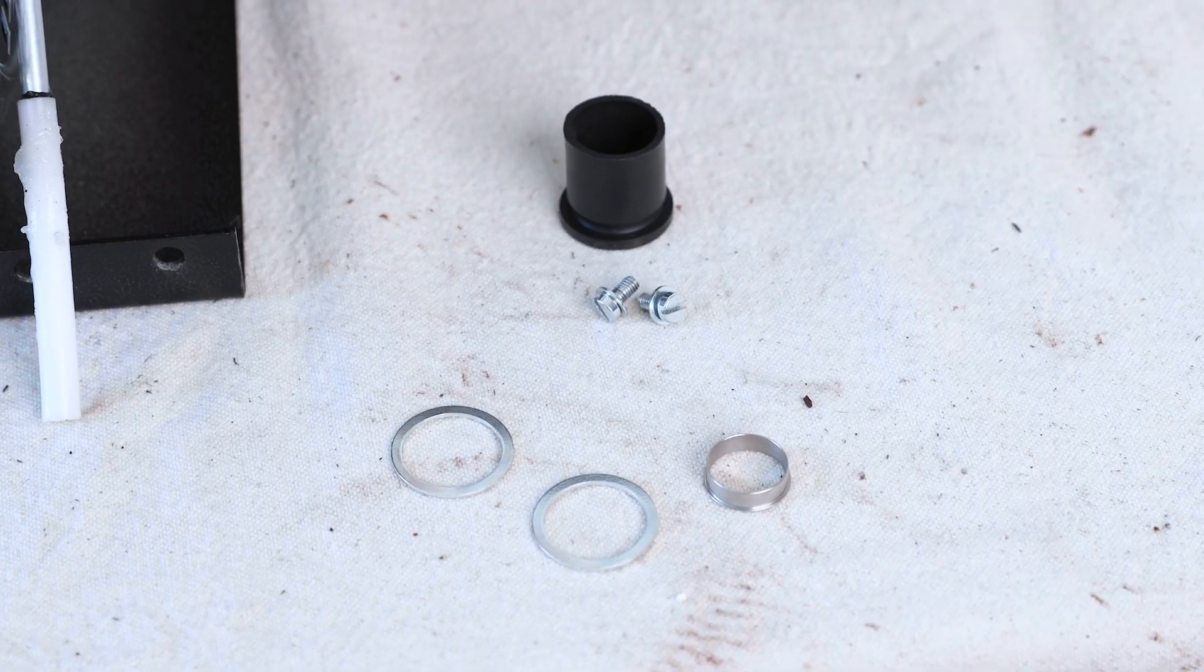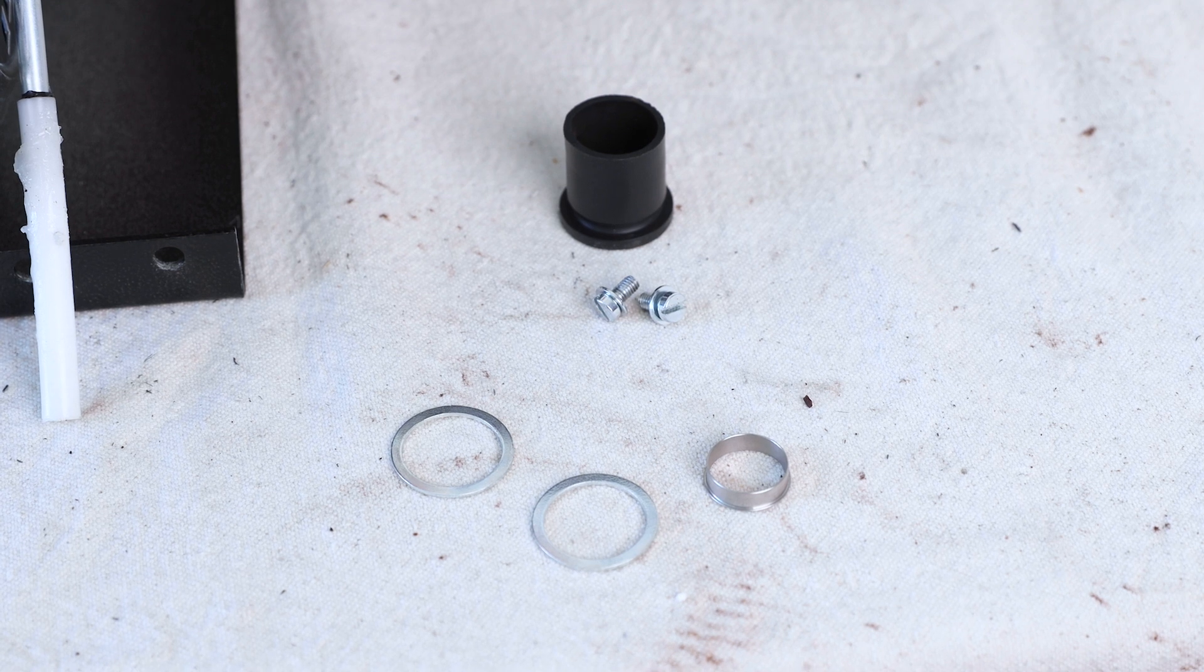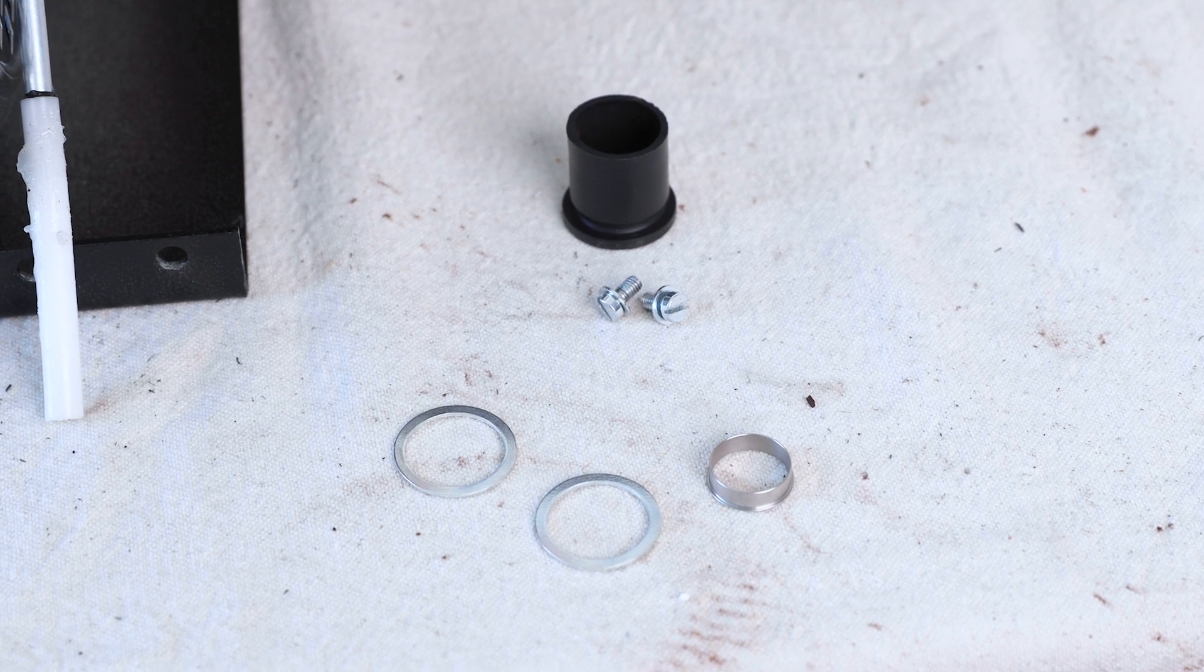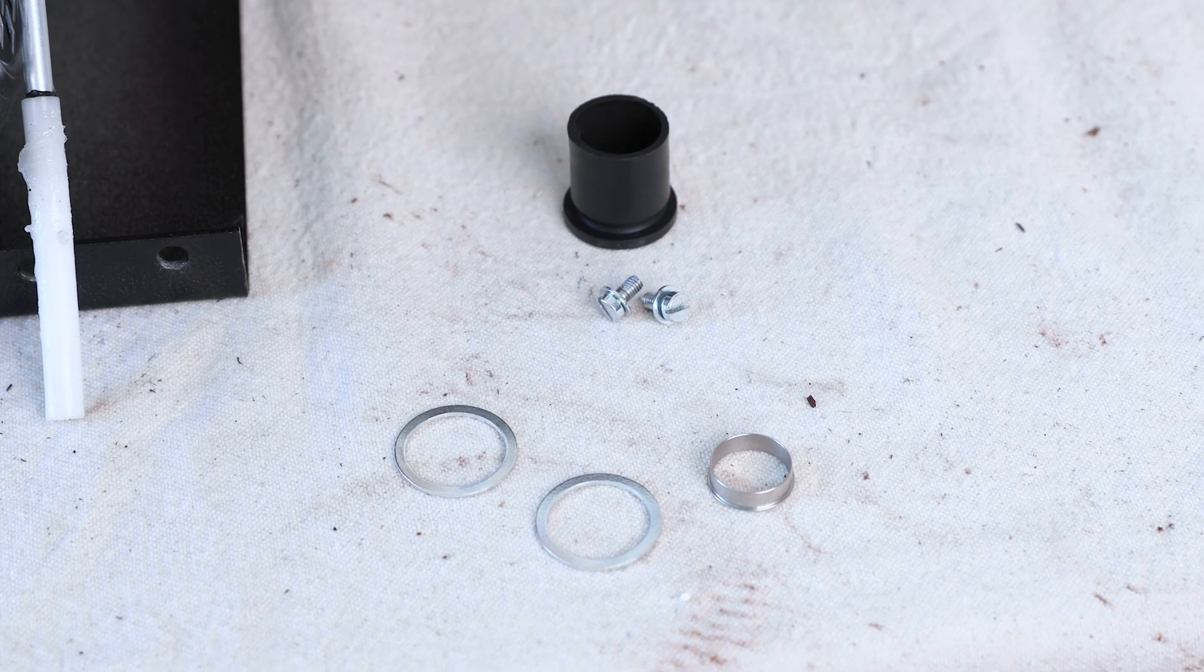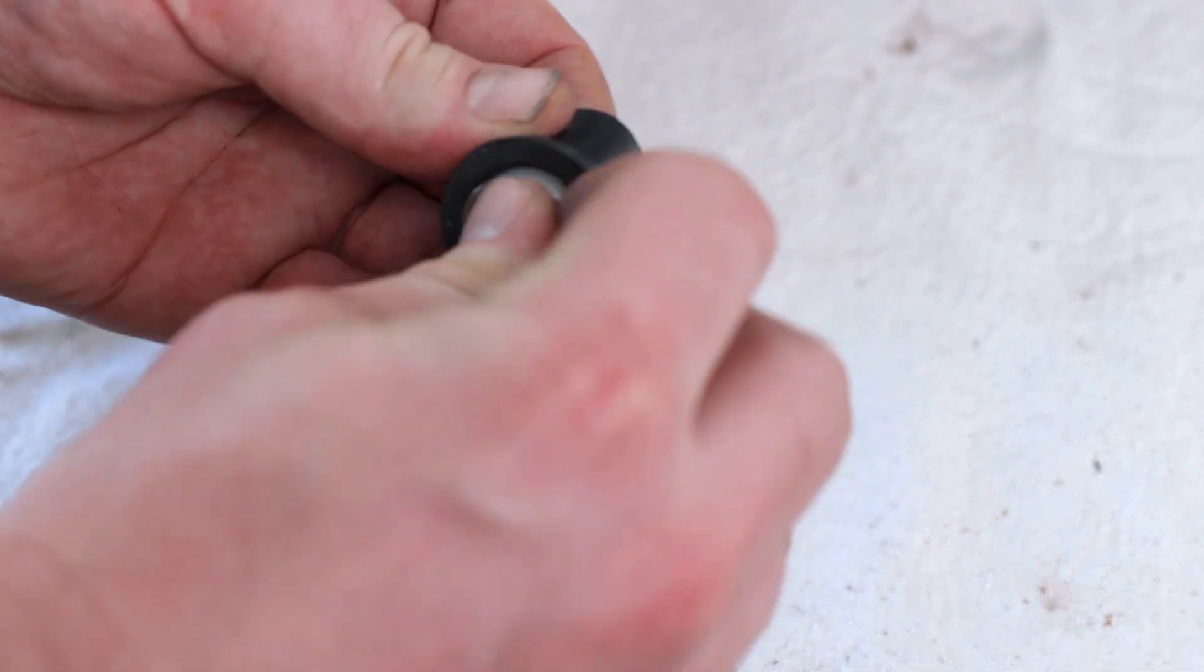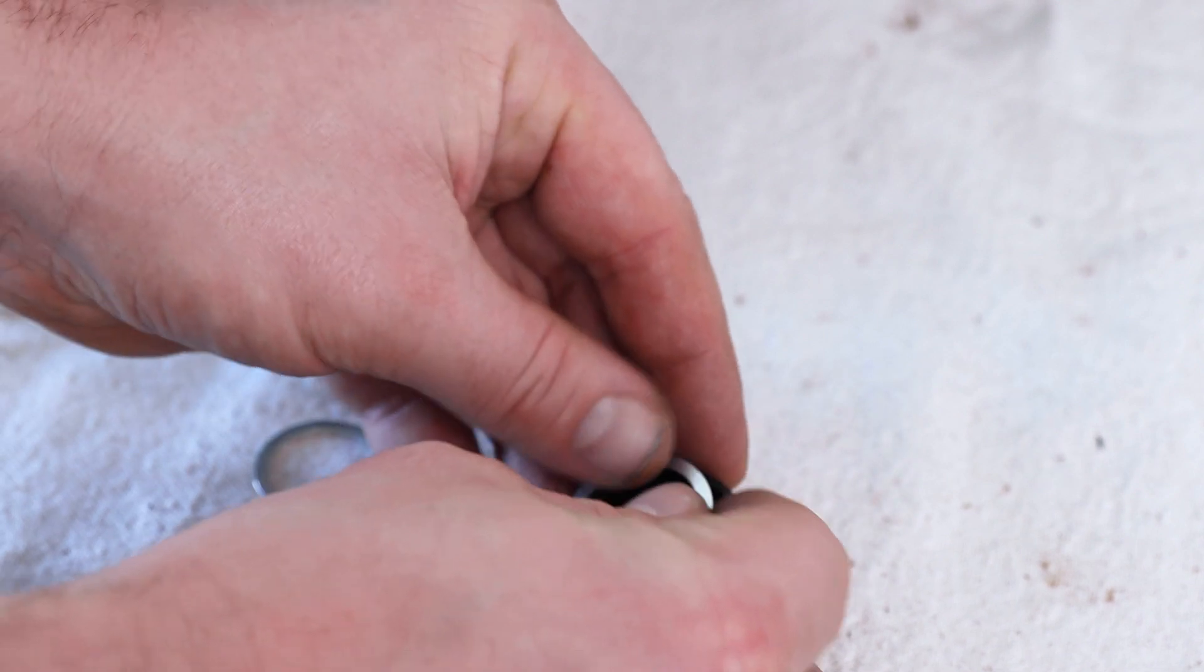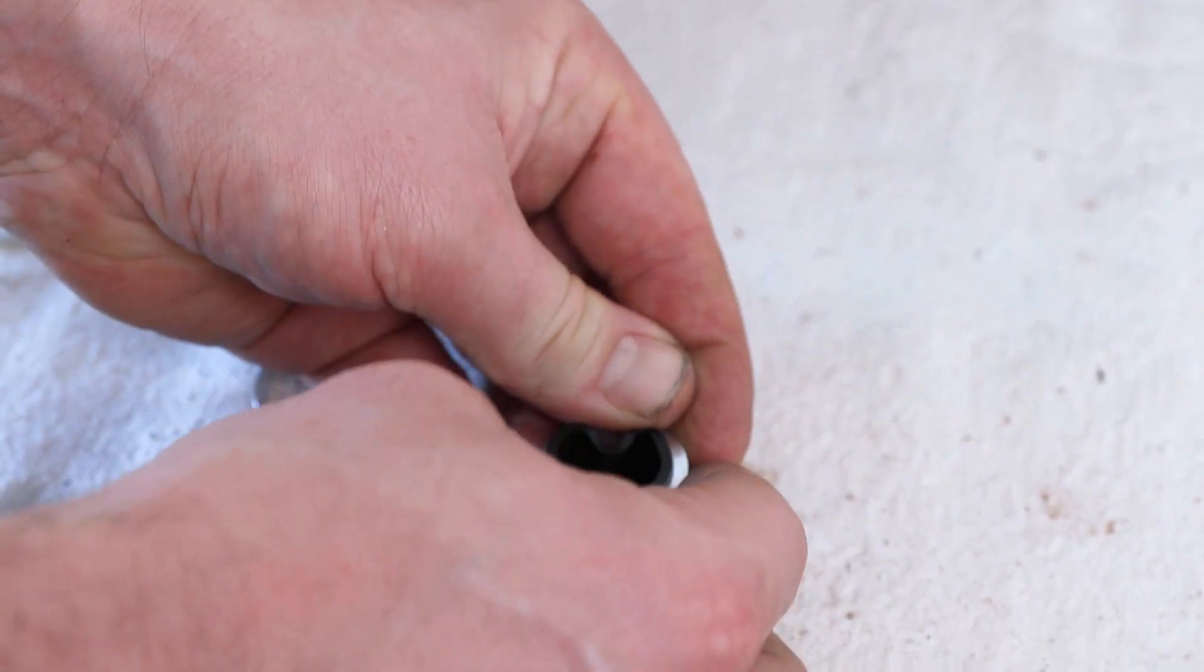So when we replace the transition tube, the part you get will actually be a kit that includes the rubber tube, the two washers that sit back in the base here, two screws, and then a little metal insert piece. The insert piece goes into the back of the transition tube. The washers go over a little ridge at the end and will go on from the front of the tube.